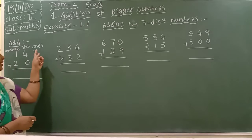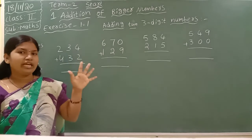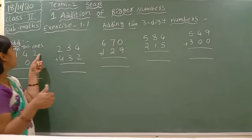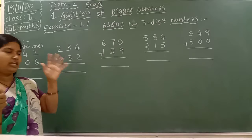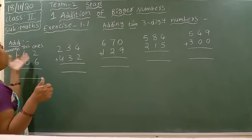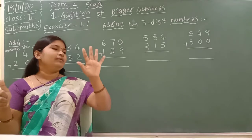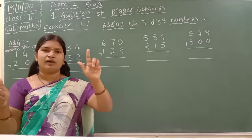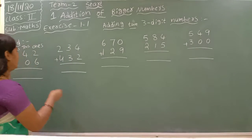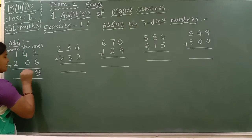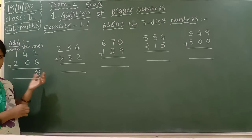First you can add the 1s place number: 2 plus 6. Take 2 in the mind, open 6 fingers. Observe carefully — keep the first number in your mind, open fingers for the next number. So 2 in the mind, take 6 fingers: 2, then 3, 4, 5, 6, 7, 8. So write down 8 in the 1s place. The 1s place answer must be written in the 1s place only — don't mix it with the 10s place answer.